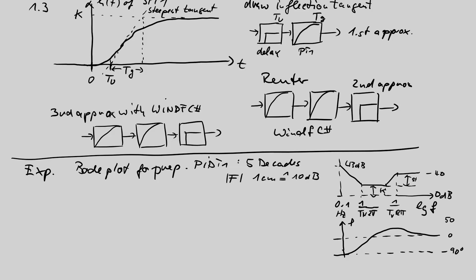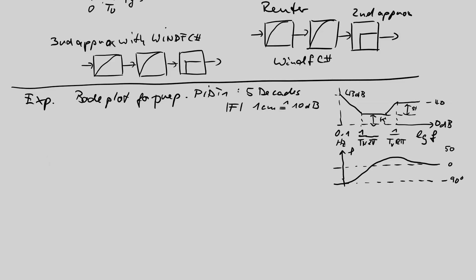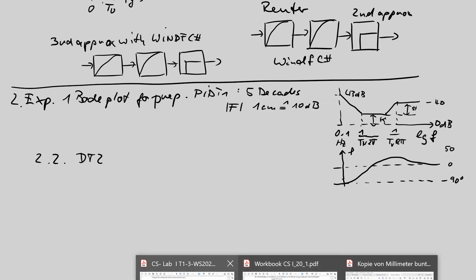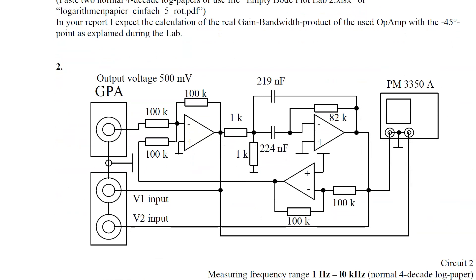Connect the device to the gain phase analyzer, start the measurement, and select the frequency scaling. We will show you how to operate the gain phase analyzer; the settings are rather simple. Once you have seen it once, you can do it yourself for the other parts of the experiment. Part two of experiment two is the DT2 circuit. All connections are the same, but the device under test is exchanged for a DT2, similar to experiment one where we had a PIDT1 measurement and a DT2 measurement.